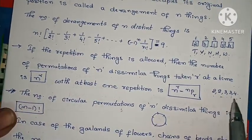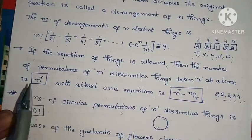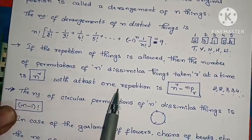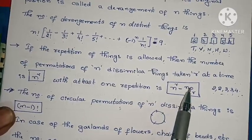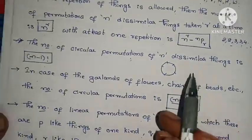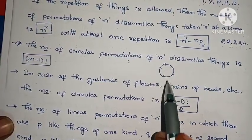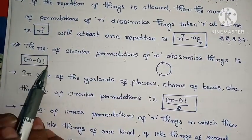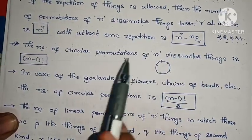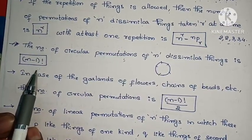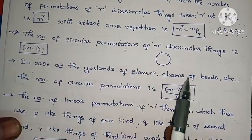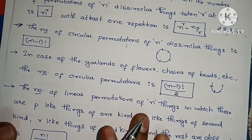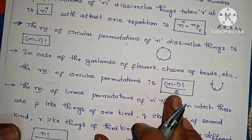When numbers are repeated — for example 2, 2, 3, 3, 4 — the permutations of n dissimilar things taken r at a time when repetition is allowed is n^r. With at least one repetition, it is n^r minus nPr. For arranging n dissimilar things in a circle, the number of permutations is (n-1) factorial. For a garland of flowers or chain of beads (chain model), the permutations are (n-1) factorial divided by 2.